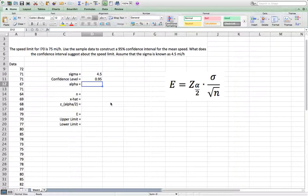So we know alpha. Alpha will be calculated as 1 minus the confidence level, so 1 minus 0.95. That gives you 0.05.